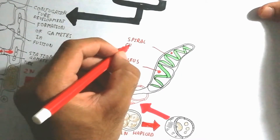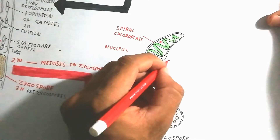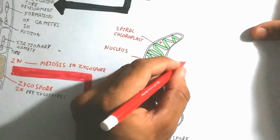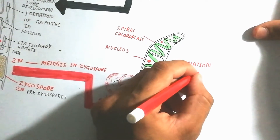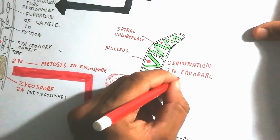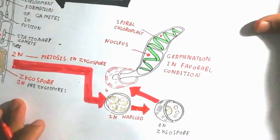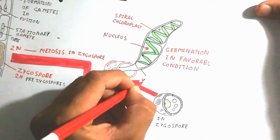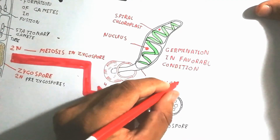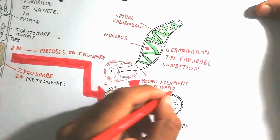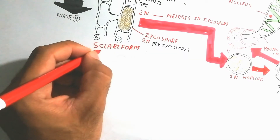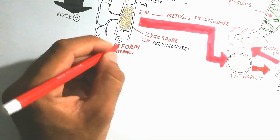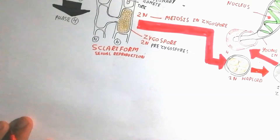All these activities occur in fresh water, which is the favorable condition, during spring season. Germination occurs, the septum increases, and growth increases through further cell division to become a large filament just like the parental filament. The nucleus and spiral chloroplast are present, and the new filament becomes identical to the parent. This completes scalariform conjugation, a sexual reproduction involving two filaments.